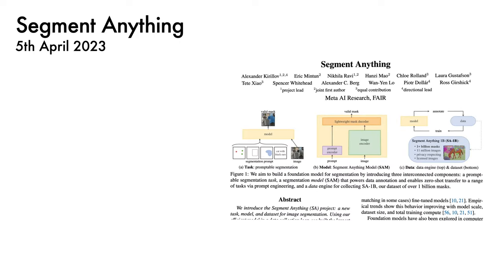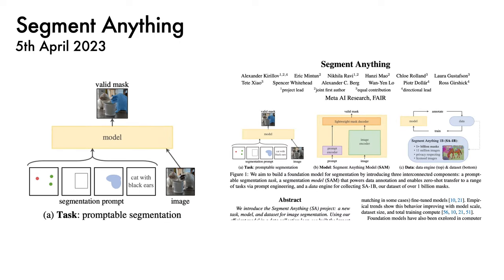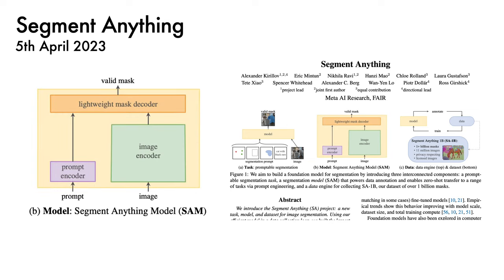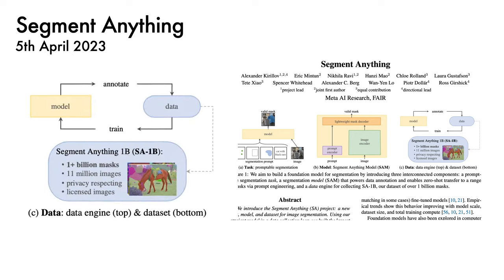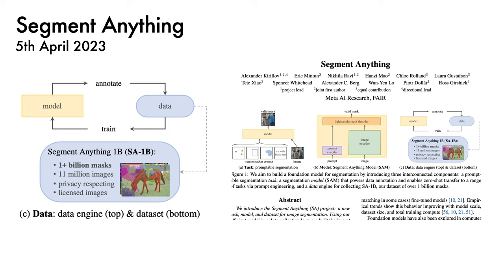Meta AI Research has released Segment Anything. The authors introduce a new task called Promptable Segmentation, where the model predicts a mask from inputs consisting of an image together with either points, a bounding box, a region, or a text description. There is SAM, the Segment Anything Model, that combines a chunky image encoder and a lightweight prompt encoder to predict masks. The authors also released the Segment Anything 1B dataset, containing more than a billion mask predictions spanning 11 million images, available for research usage.